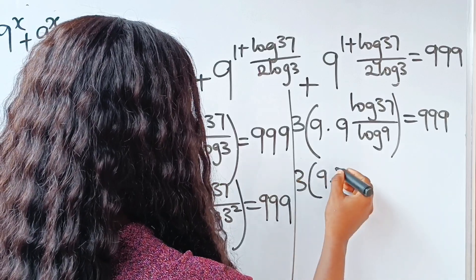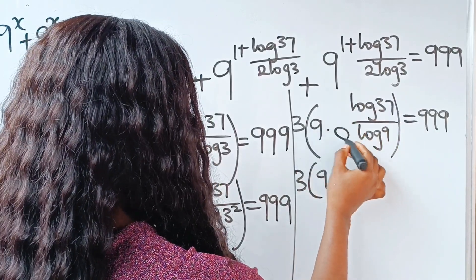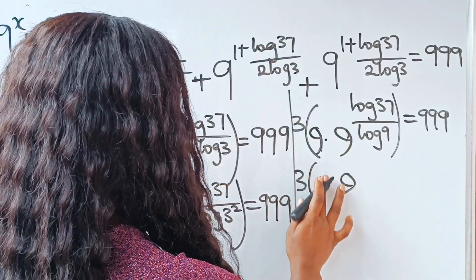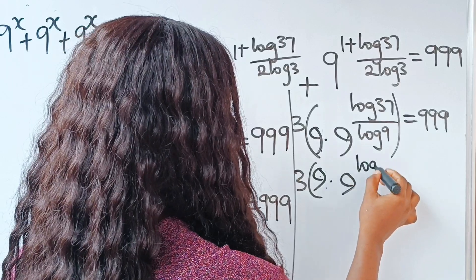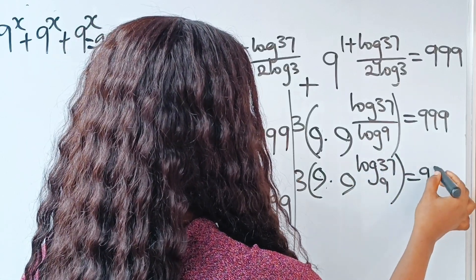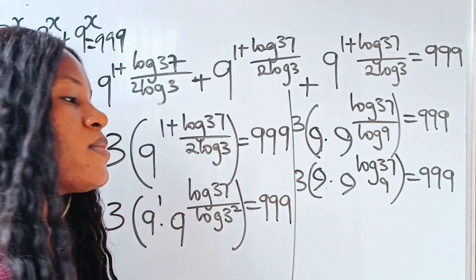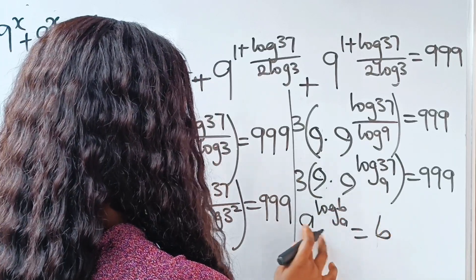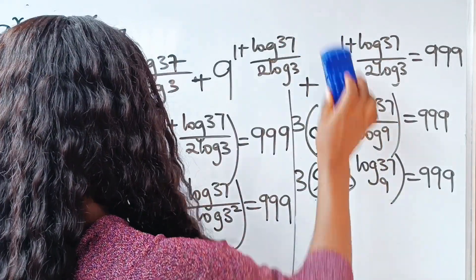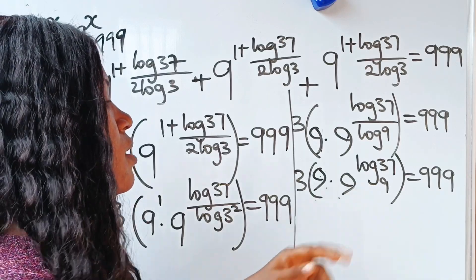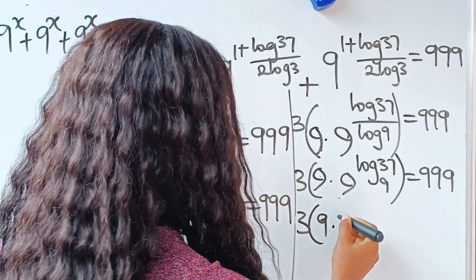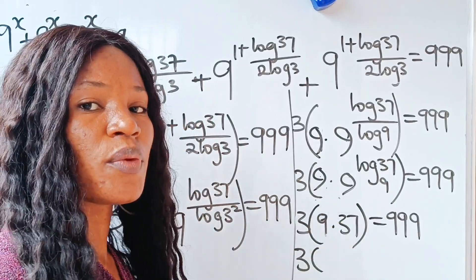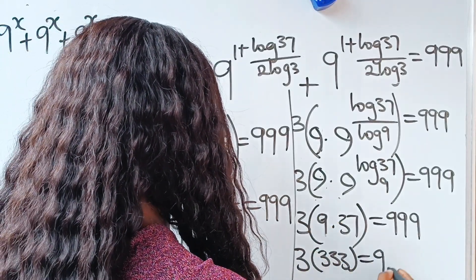Now using the identity a^(log_a b) = b, we have 9^(log₉ 37) = 37. So the expression becomes 3 × (9 × 37). Since 9 × 37 = 333, we get 3 × 333 = 999. And indeed, 3 × 333 = 999, which confirms that our solution is correct.